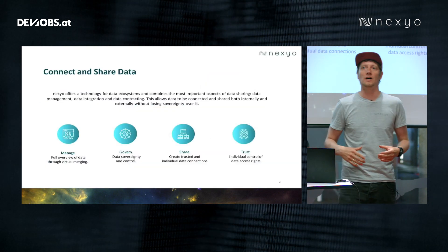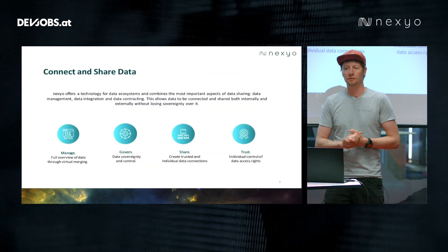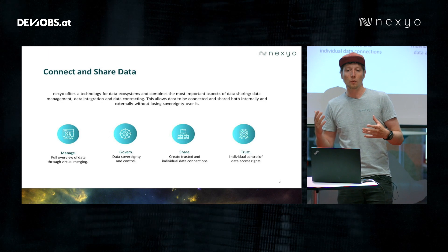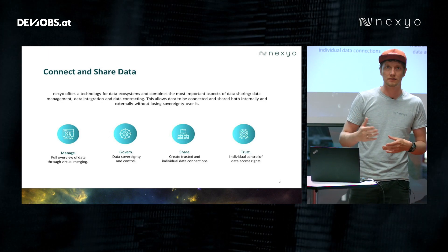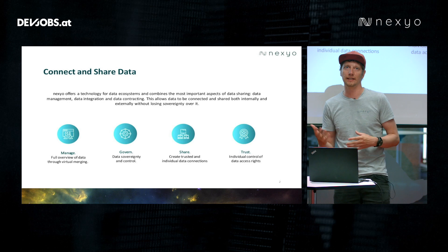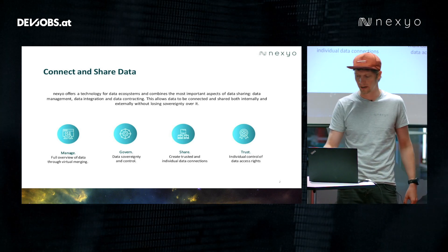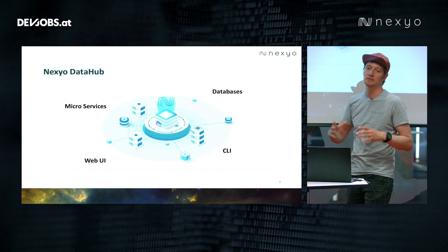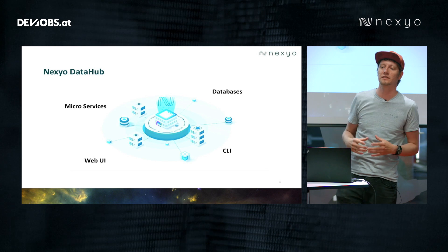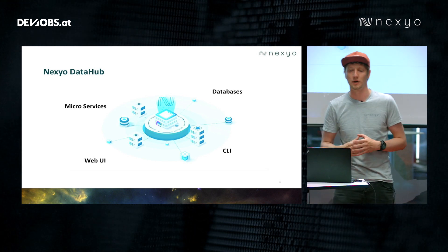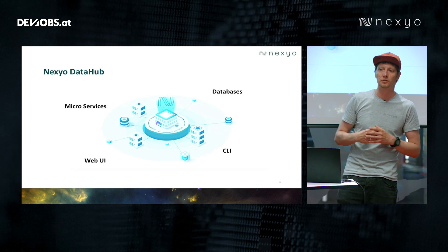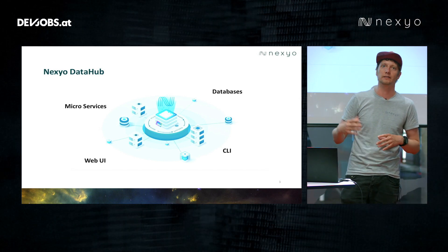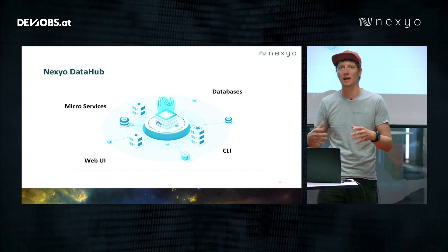We at Nexio are a Vienna-based startup and we develop software which empowers us to build operative data ecosystems. We allow our customers to manage, govern and share data in a trusted way. The main product at Nexio is the Nexio Data Hub — a software component which sits in the center of your data infrastructure. It communicates with different microservices, databases, maybe other data hubs, and has a web UI and can be controlled over a CLI in an automated way.